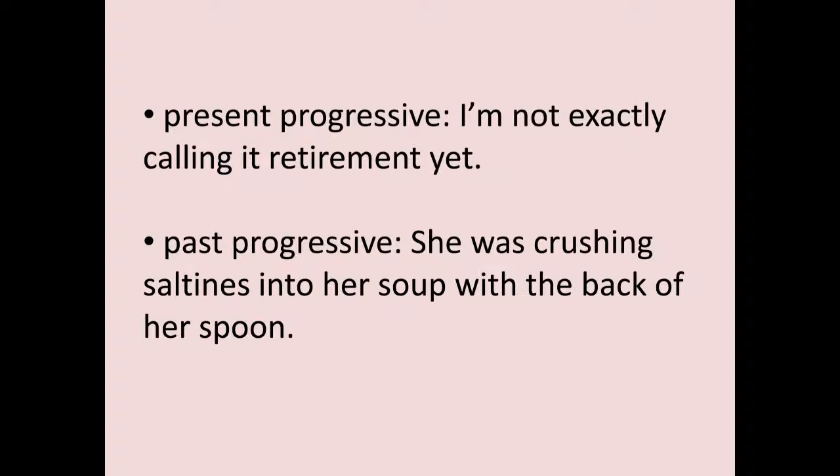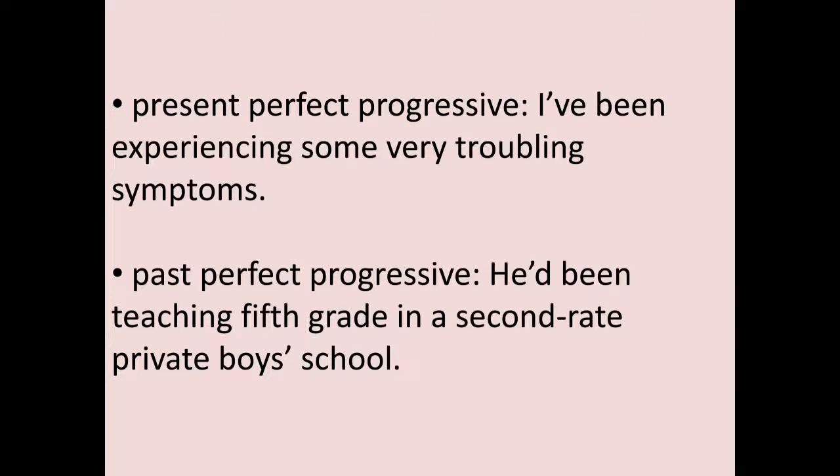When both perfect and progressive are switched on, we get two auxiliary verbs — one for each aspect. For example: 'have been teaching' — 'have' indicates perfect, 'been' (a form of be) indicates progressive, and 'teaching' is the lexical verb in gerund participle form. The tense falls on the first auxiliary: 'have' is present, so this is present perfect progressive. With past: 'he had been teaching' — 'had' marks past tense.